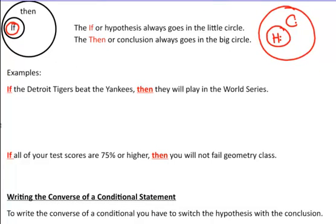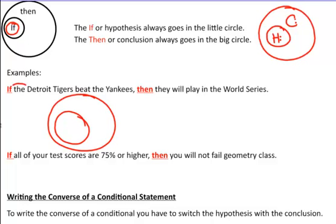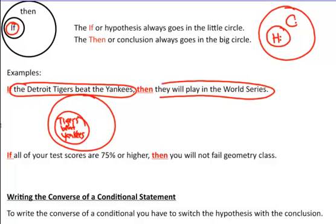It says: 'If the Detroit Tigers beat the Yankees, then they will play in the World Series.' So I draw a circle, and I draw another circle. The little circle has to be 'the Detroit Tigers beat the Yankees' — we'll abbreviate: 'Tigers beat Yankees' in the little circle. What goes in the big circle: 'they will play in the World Series,' so we write 'play World Series.' And you're finished.